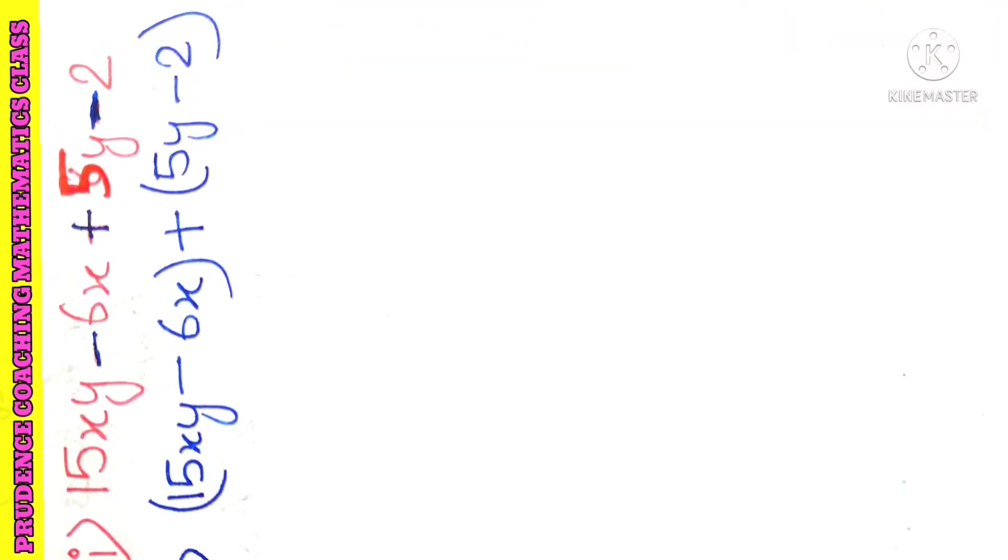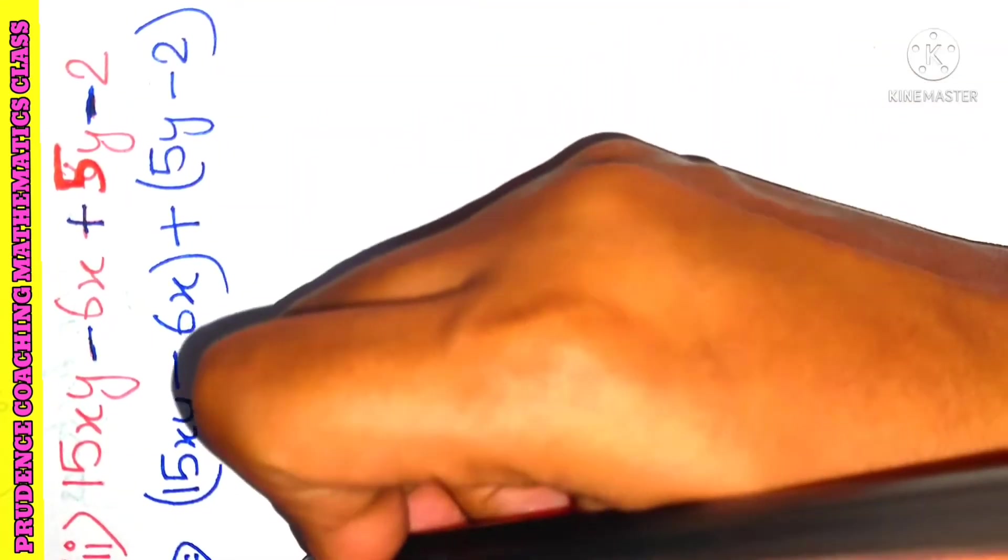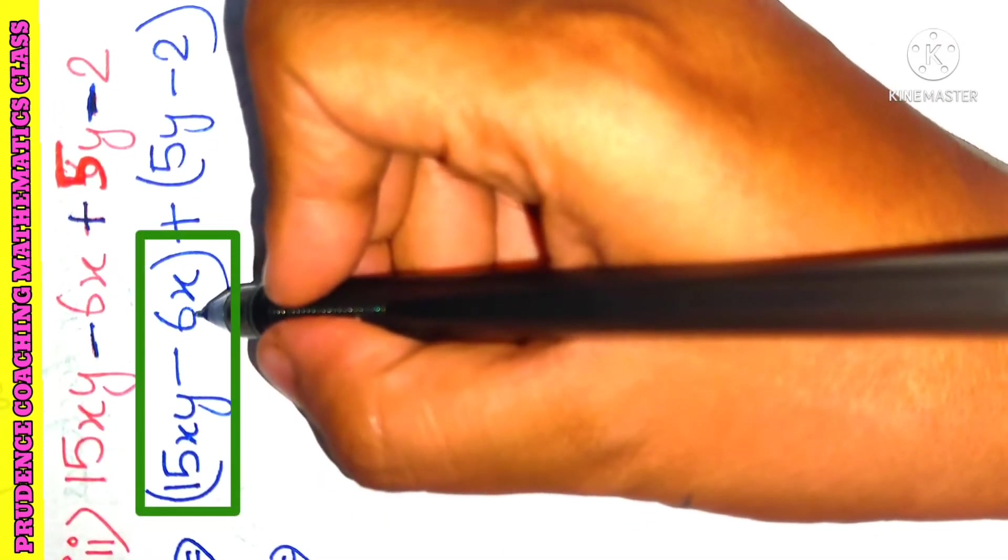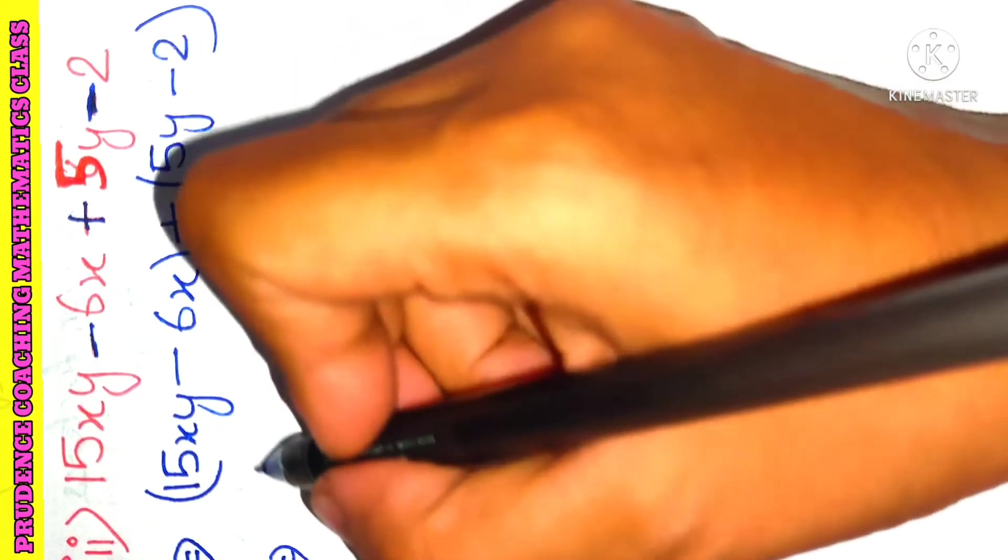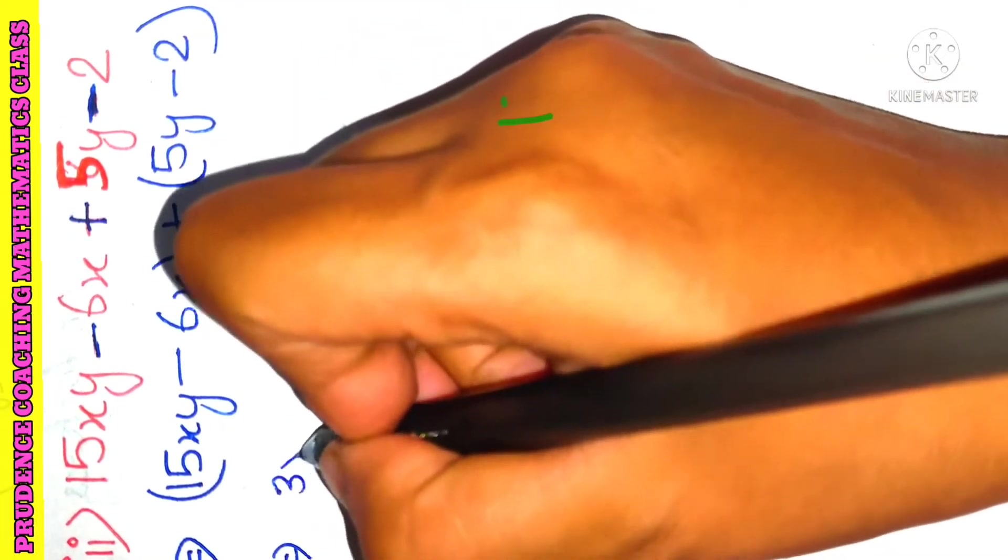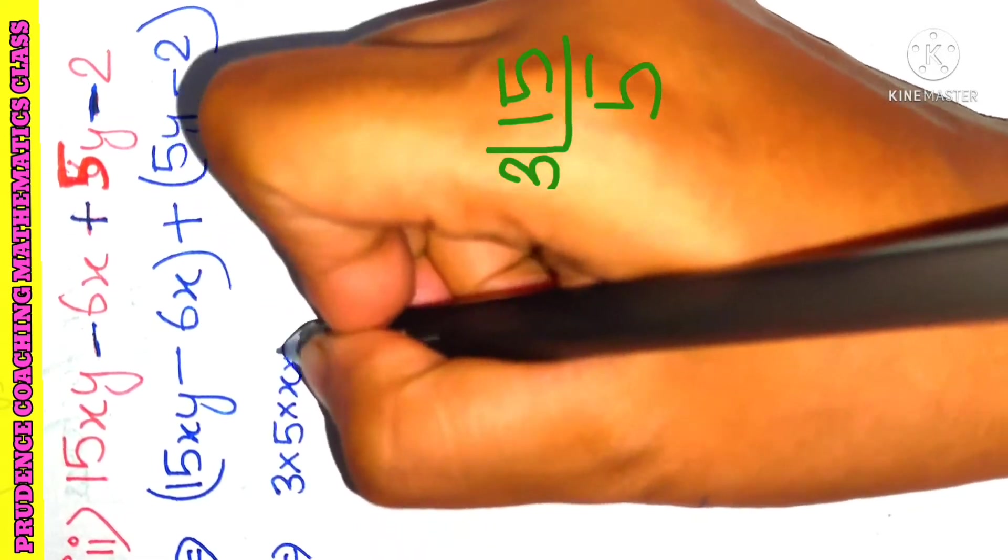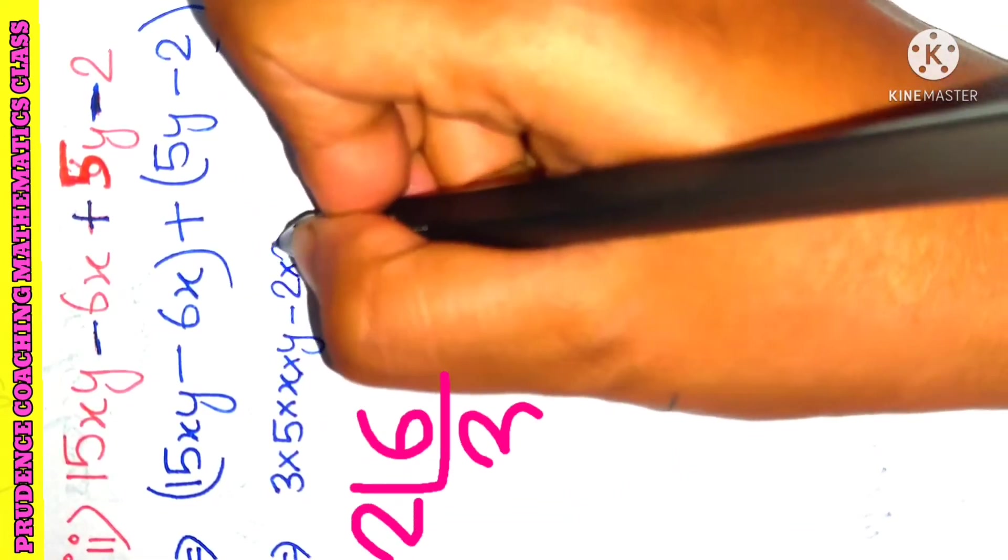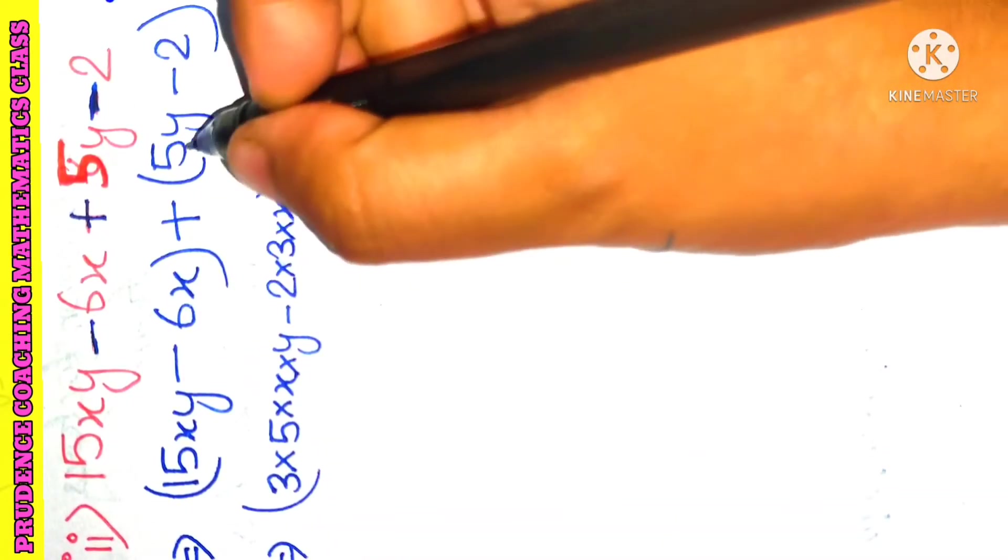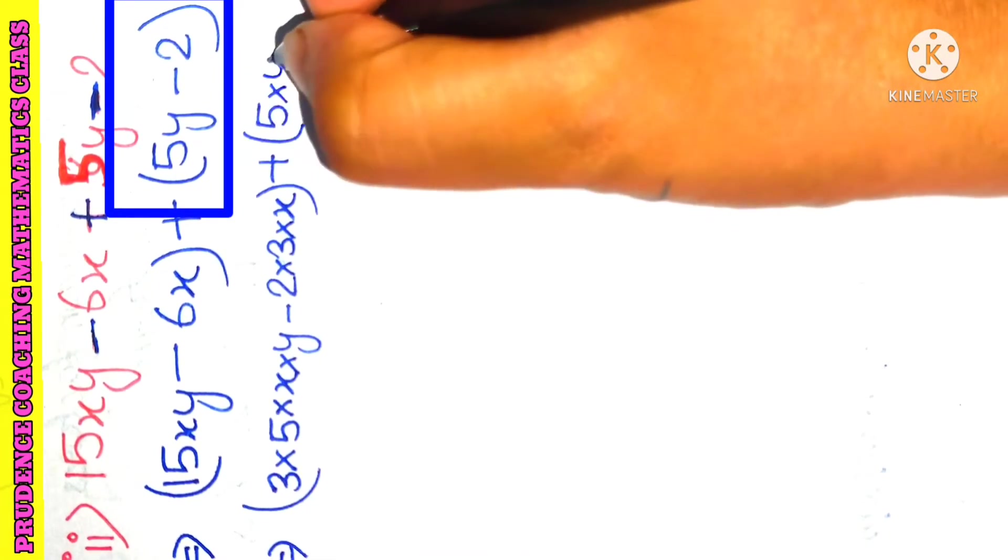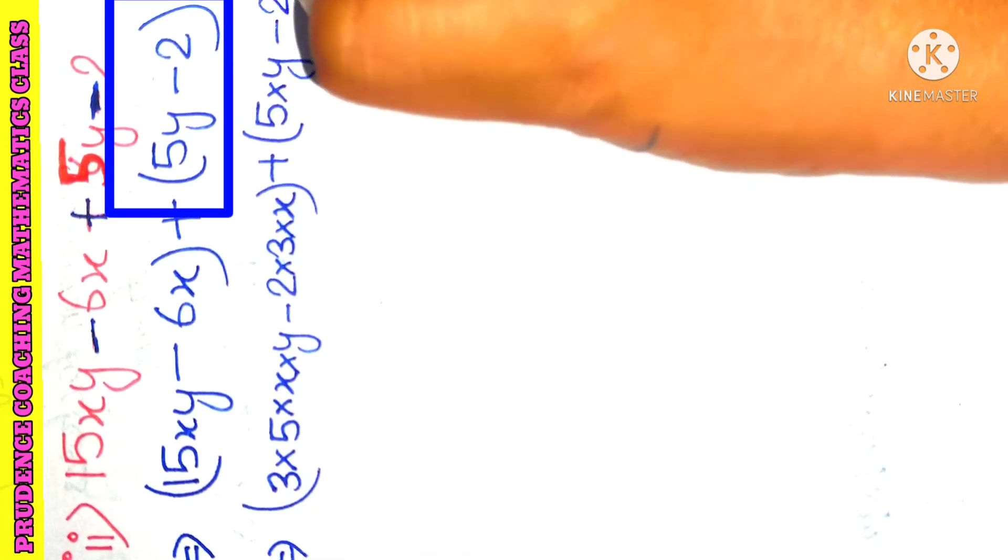Now our step will be to take the common factors. So 15 can be written as 3 into 5, and 6 can be written as 2 into 3. If you want, you can write this one like this: 3 into 5, that is the prime factorization of 15, into x into y, minus 6 means 2 into 3 into x. So we have just written like this. Plus, here we have 5. 5 is a prime number so it will be as it is. Y we have, so y, minus 2 is a prime number, so like this.